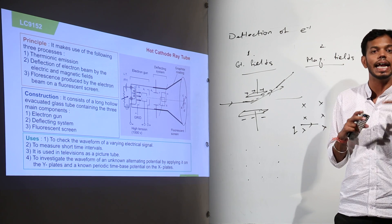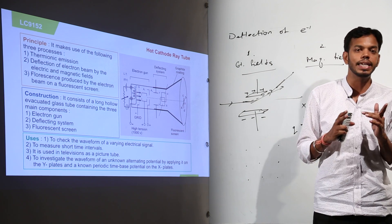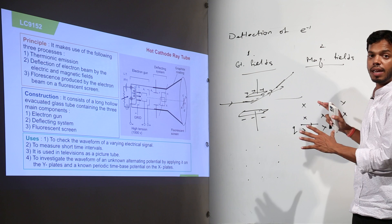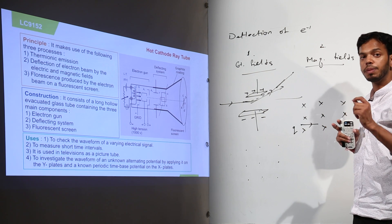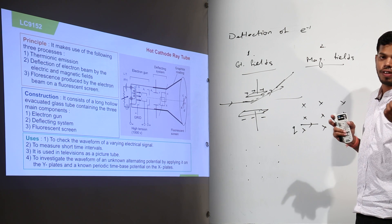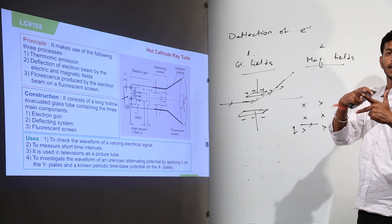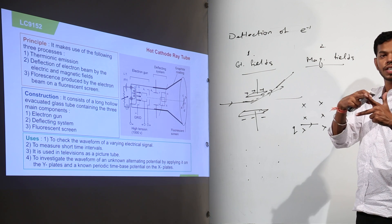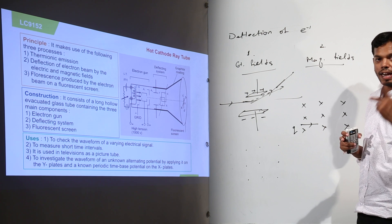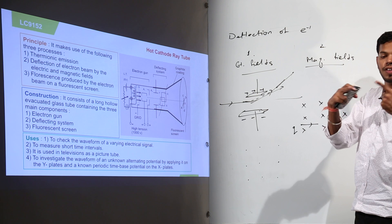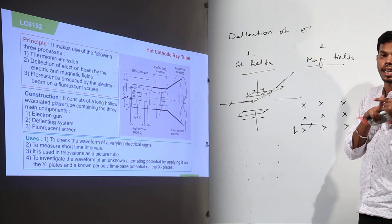And this force has a direction which is given by Fleming's left hand rule which is force field current. You are not supposed to go into detail at this moment. The charge particle when it is put up in a region of magnetic field will experience a force which is given by Fleming's left hand rule.